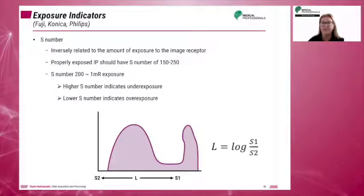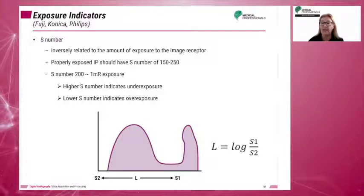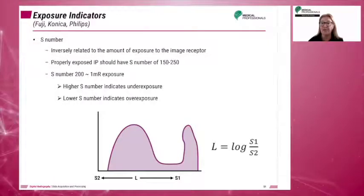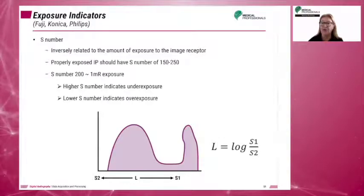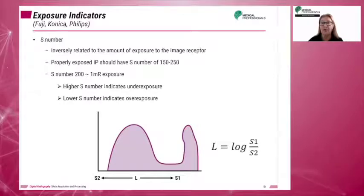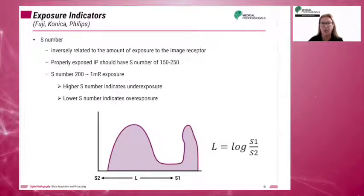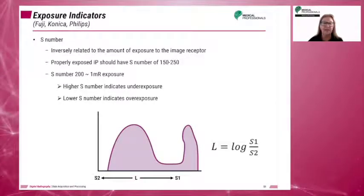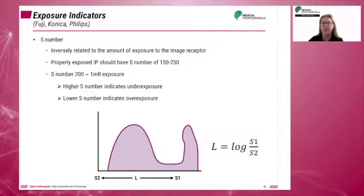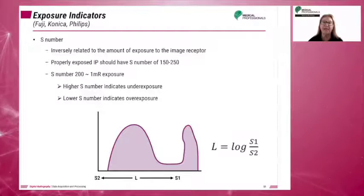With Fuji, Konica, and Philips systems, increased or high exposure to the plate leads to lower S numbers, and low exposure to the imaging plate leads to higher S numbers. Doubling the exposure reduces the S-value by one-half.